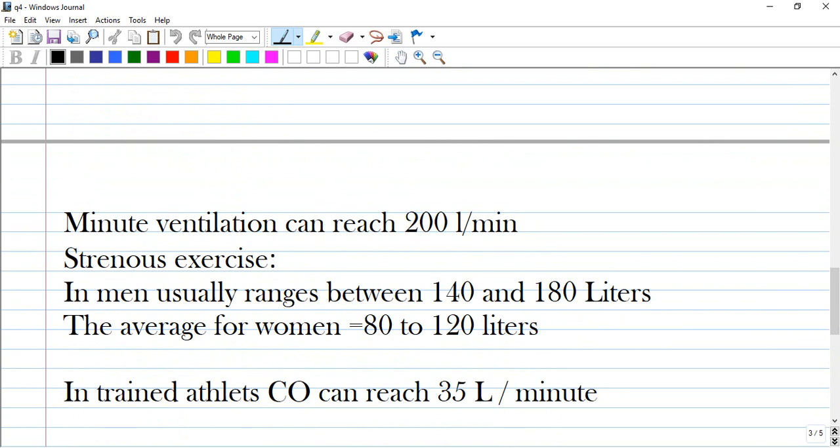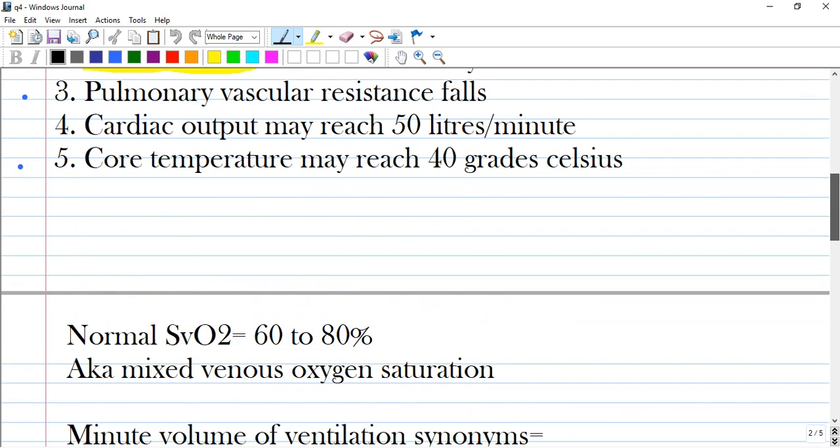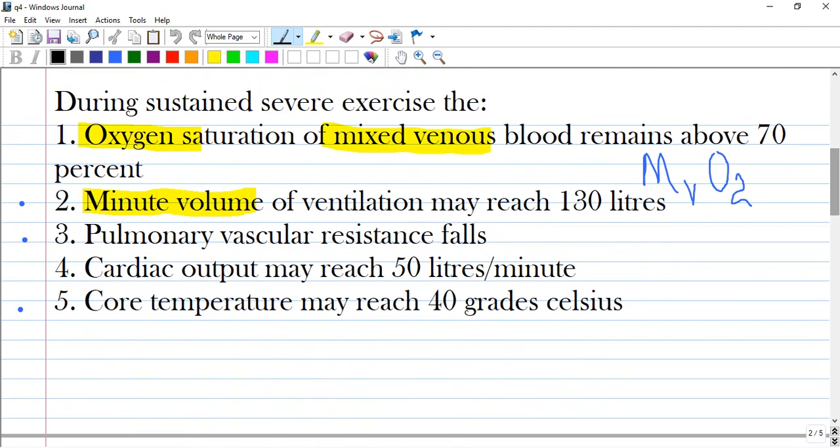I have many facts that I got from the internet from many sources. Minute ventilation in severe strenuous exercise can reach 200 liters per minute. Another source says in men it usually ranges between 140 and 180 liters, and the average for women can be 80 to 120 liters per minute. So option 2 is correct.